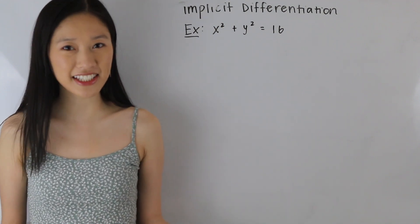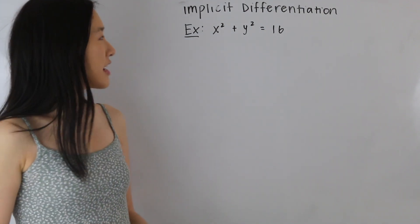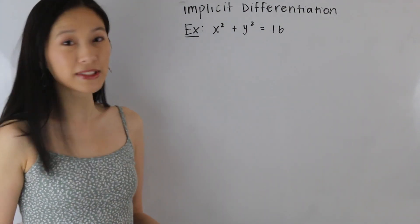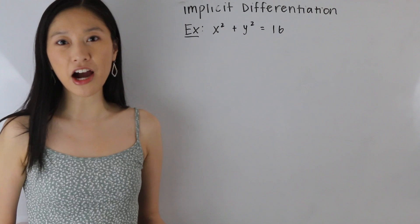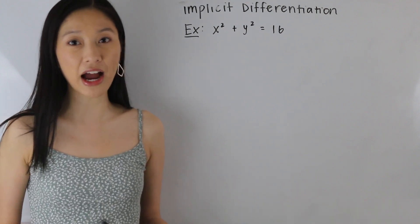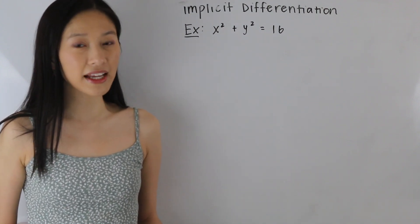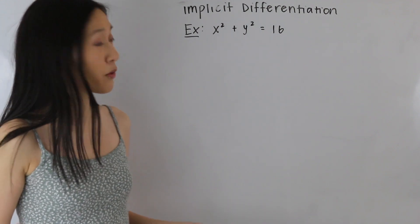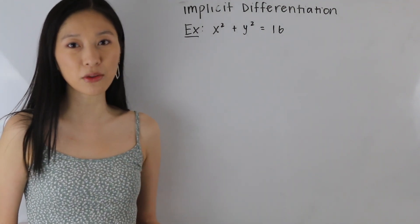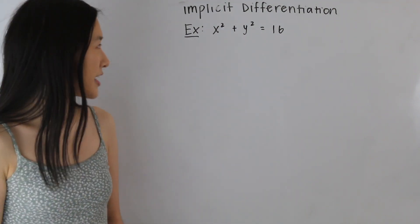So let's go ahead and take a look at this example here. We have x squared plus y squared is equal to 16, and let's start out by taking the derivatives of each of our terms. One thing is that whenever we take the derivative of a y variable, we need to multiply by dy/dx.